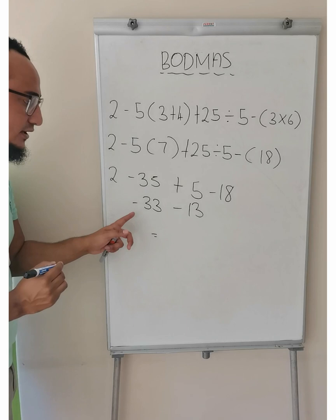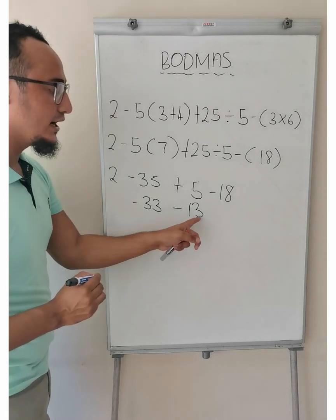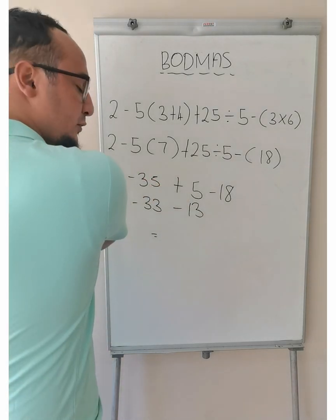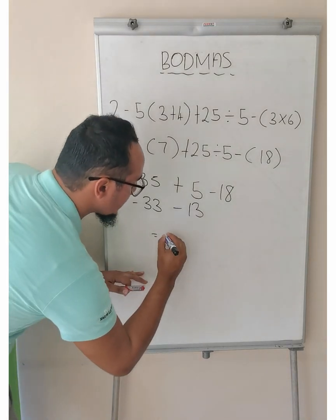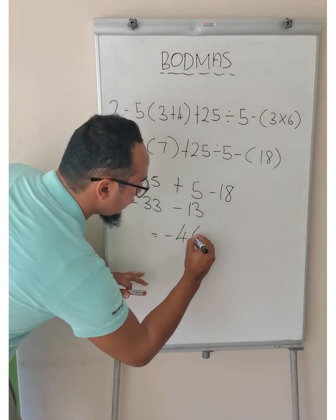2 minus 35 is negative 33 and positive 5 minus 18 is equal to negative 13. And if I get my answer from here, negative 33 minus 13. Remember, when I'm minusing, I'm going further to the left-hand side and I get the answer of negative 46.